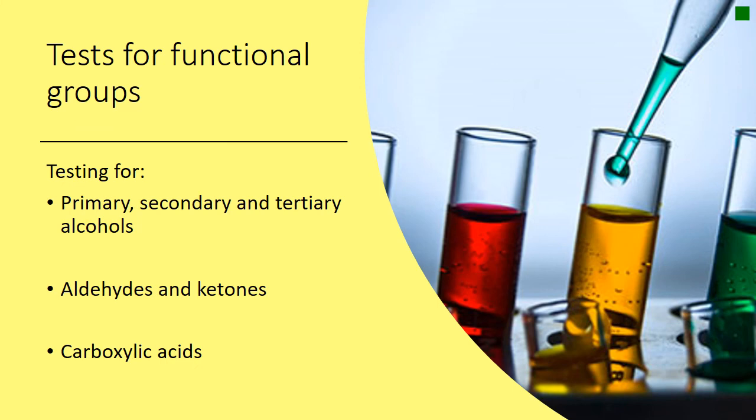That brings us to the end of this video lesson. We've had a look at the tests and various questions associated with all the different types of alcohols, for aldehydes and ketones, and for carboxylic acids. We also squeezed in the bromine test for alkenes. Hopefully that has been clear.